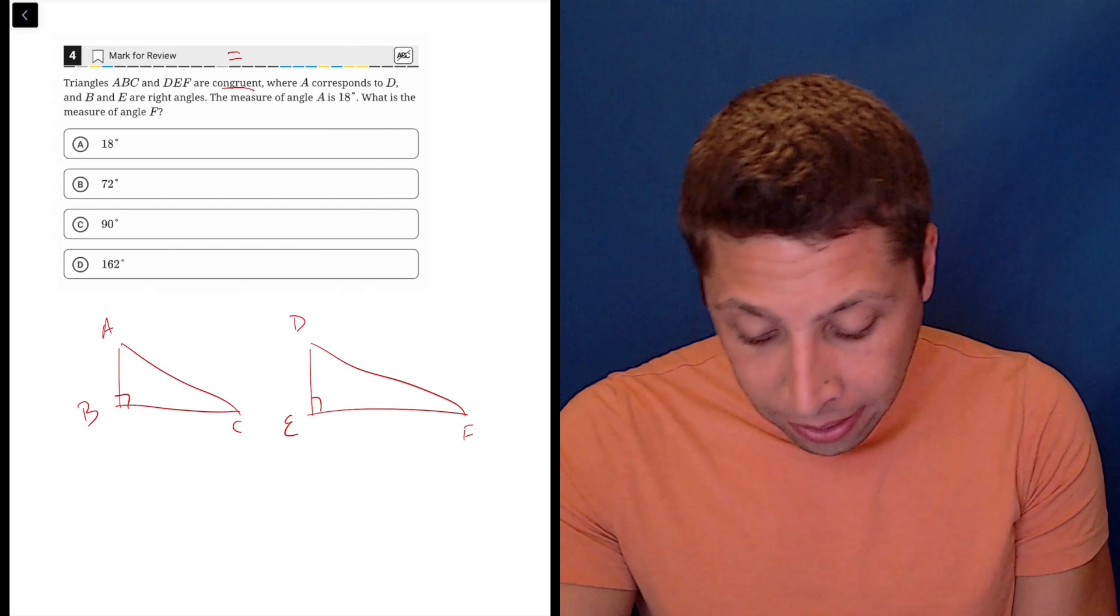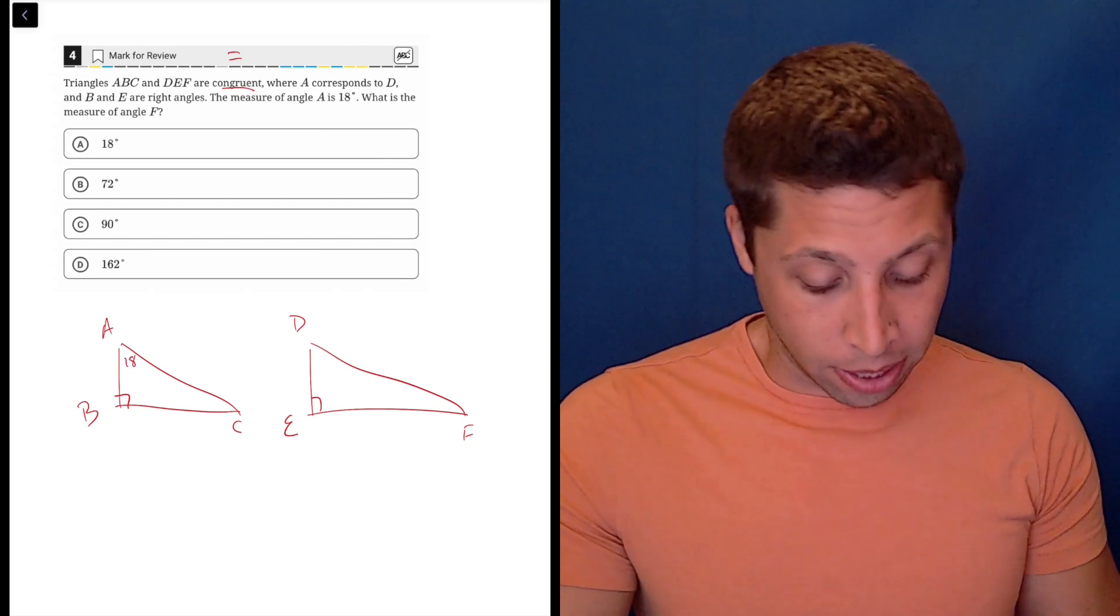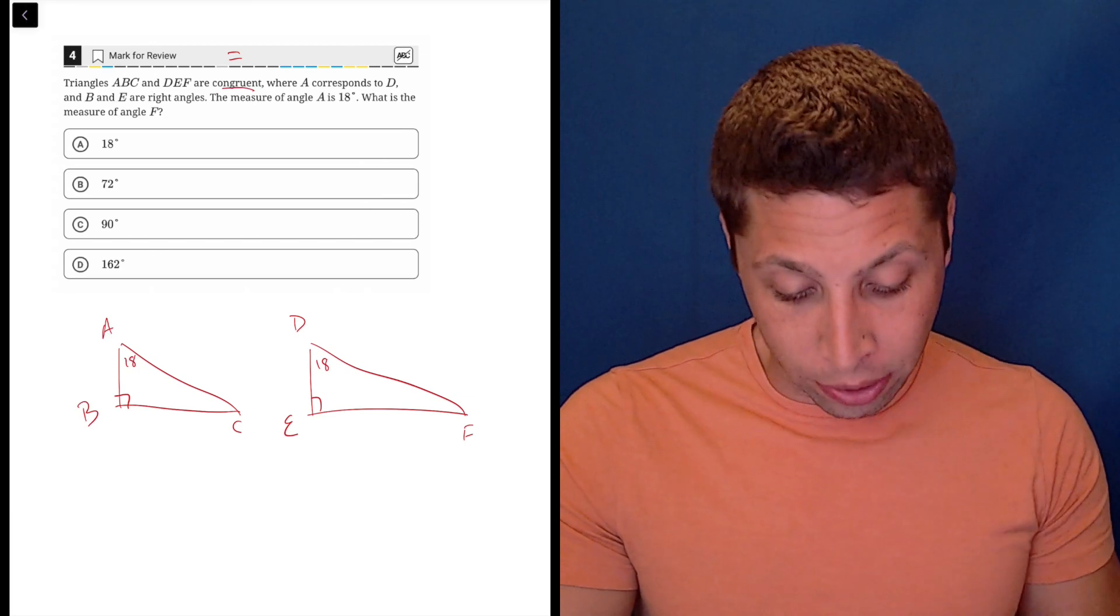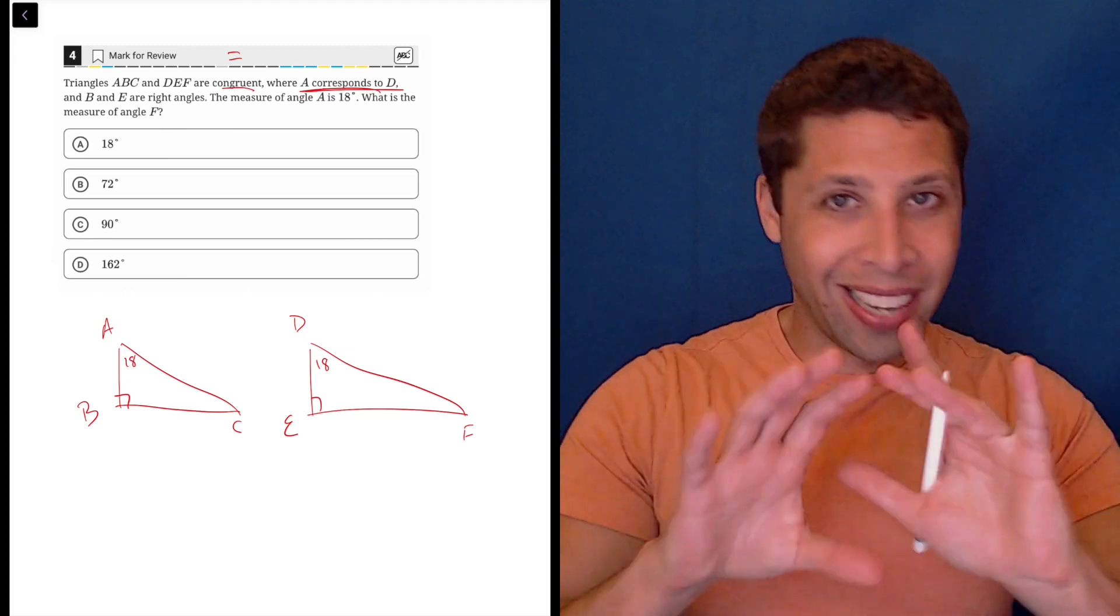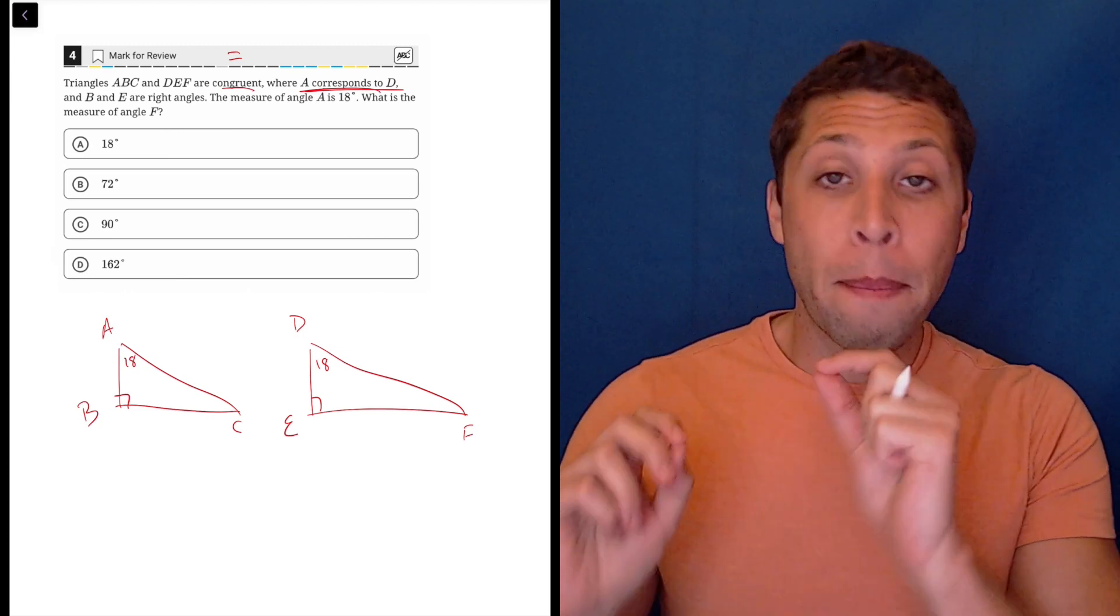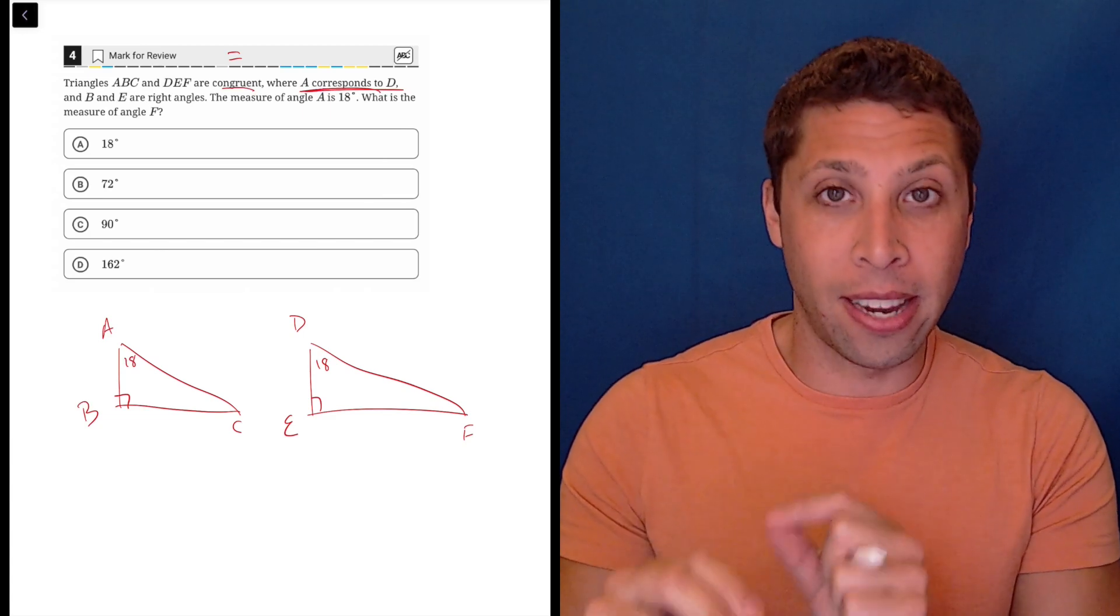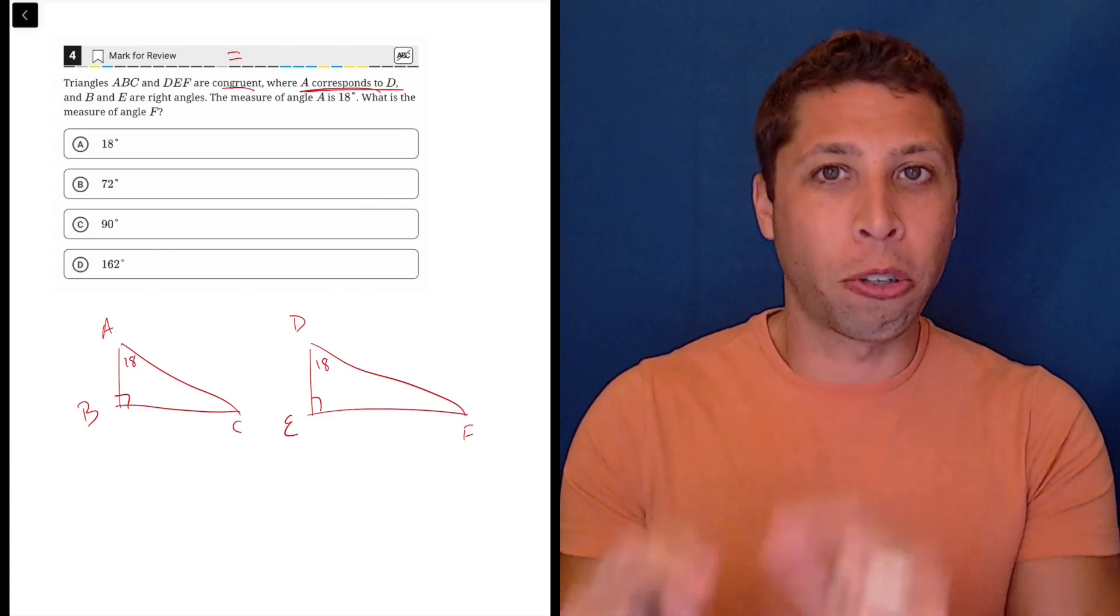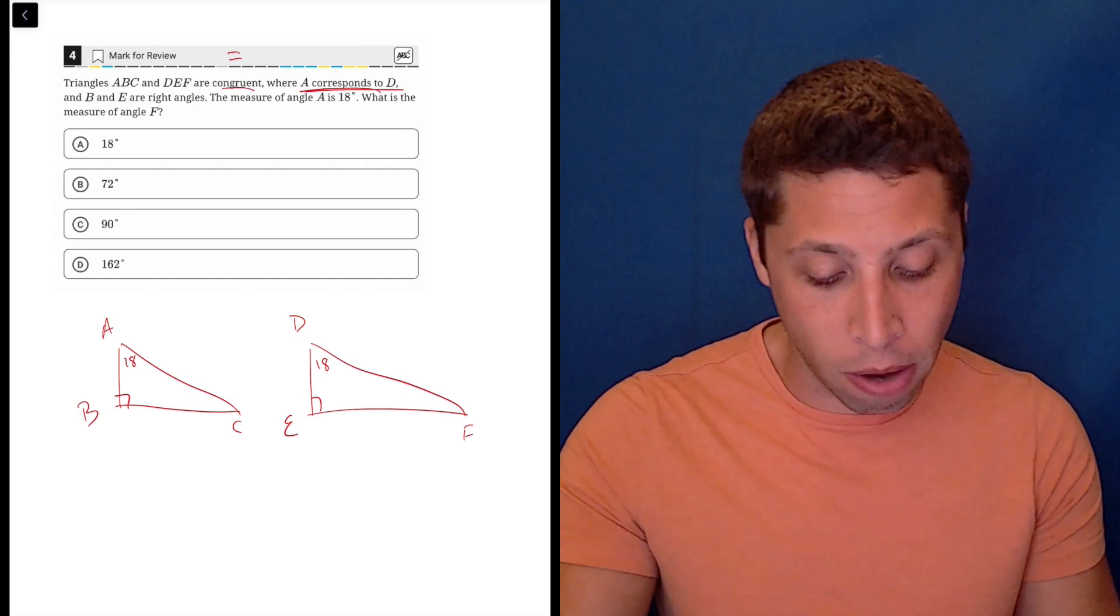The measure of angle A is 18 degrees, so we'll put that up here. And that also tells us that the measure of angle D is 18 degrees. That's what they mean when they say that these correspond. If they're congruent triangles, remember, they're the same exact triangle. So we can kind of transfer one piece to another based on what corresponds. So they're telling us A is 18 degrees, but because it corresponds to D, they're also telling us D is 18 degrees.